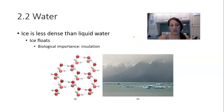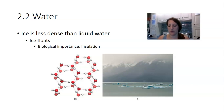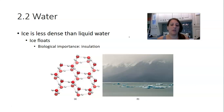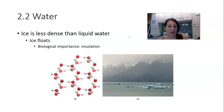Because ice is less dense — again, because of the greater space between the molecules — it floats on water. This is important in a biological sense: bodies of water, especially here in upstate New York, tend to freeze over in the winter. When they freeze, it's the top layers of water that freeze, and that frozen water doesn't sink to the bottom because it's less dense. Instead, it floats on top.